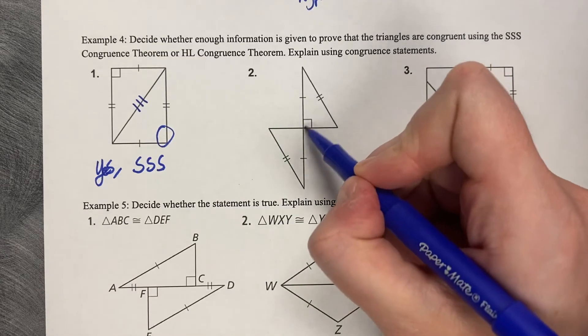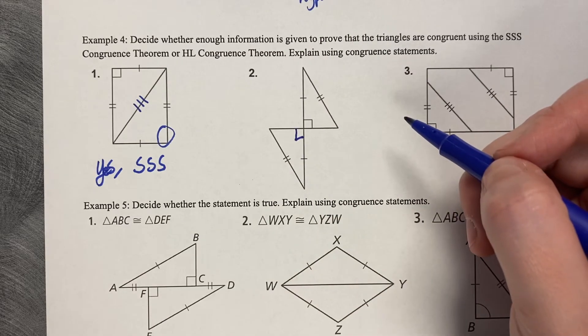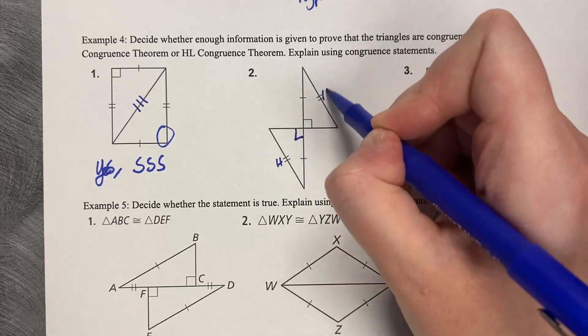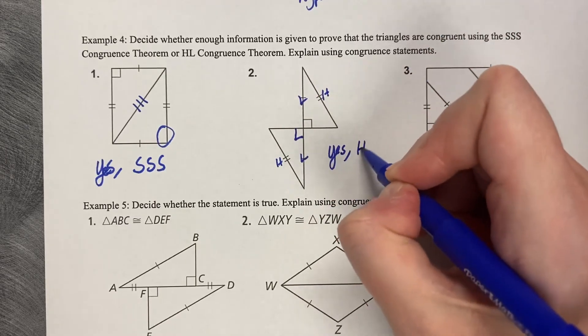Number two, these are vertical angles, so I am allowed to put a 90-degree angle in this spot. Now I've got a hypotenuse and a leg. So yes, by hypotenuse leg.